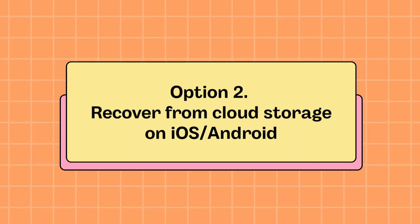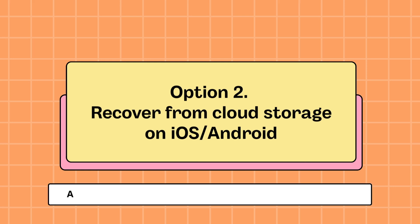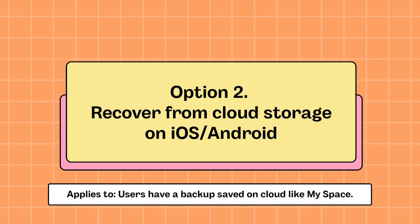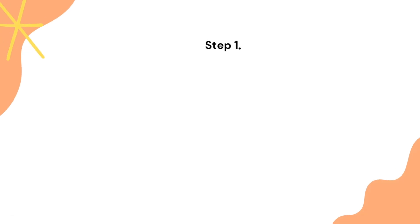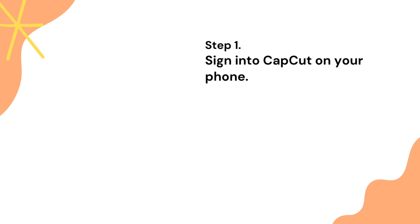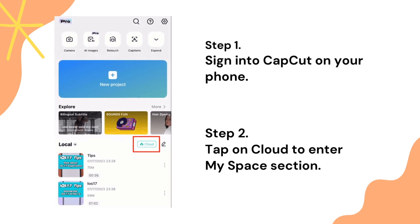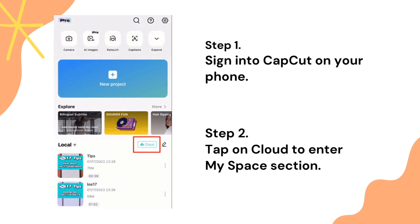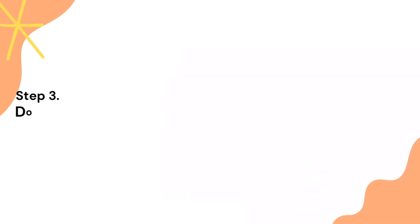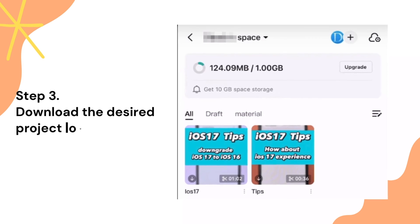Option 2: Recover from cloud storage on iOS or Android. This applies to users who have a backup saved on cloud, like MySpace. Step 1: Sign into CapCut on your phone. Step 2: Tap on Cloud to enter the MySpace section. Step 3: Download the desired project locally.